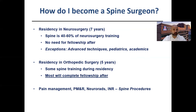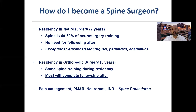How do you become a spine surgeon? You either complete a neurosurgical residency or an orthopedic residency — there are pros and cons to both. Neurosurgical residency is seven years in the United States. Spine training comprises anywhere between 40 to 60 percent of that training. I did a neurosurgery residency, and more than 50 percent of it was spent doing spinal operations — that's just the nature of our field.